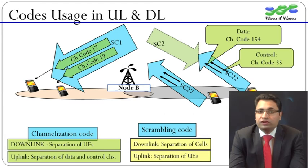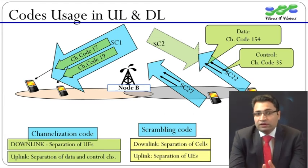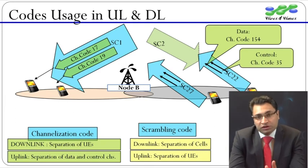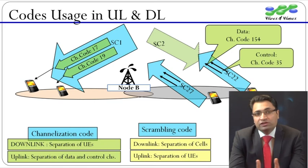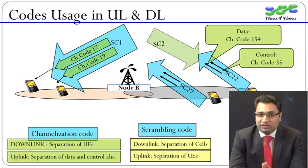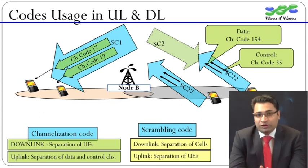Now let us introduce two UEs in the right cell, and we can see that they are using different scrambling codes in uplink. This means Node B will separate signals of UE1 from signals of UE2 with the help of uplink scrambling codes. Hence in uplink, scrambling codes are used as UE ID. Uplink scrambling codes should not be repeated within one RNC area, but we have 16 million scrambling codes in uplink, so we will never run out of them.